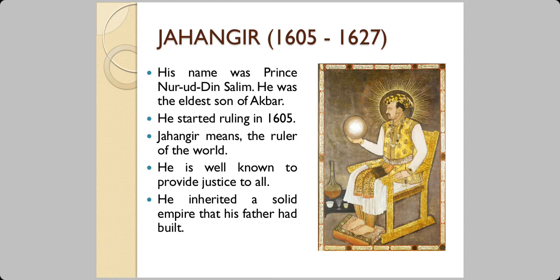The next emperor of the Mughal dynasty was Jahangir, who ruled over India from 1605 to 1627. His real name was Nuruddin Salim. He was the eldest son of Akbar, and Jahangir itself means the ruler of the world. He is well known for providing justice to all and inherited a very solid empire that his father had built based on his policies with religion, the Rajputs, and Tauhid-i Ilahi.